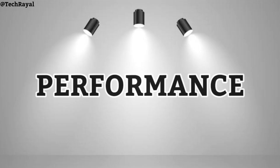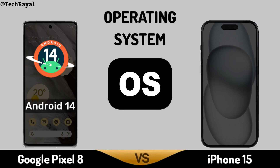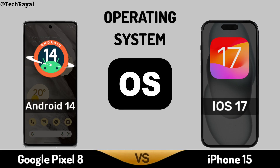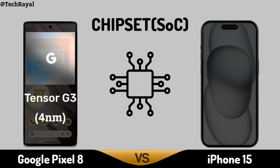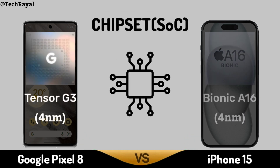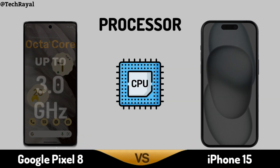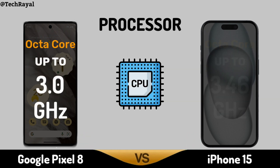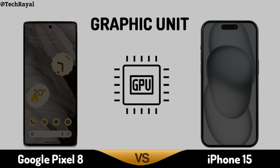Now, Core Performance: Operating System. Chipset. Processor. Graphic Unit.